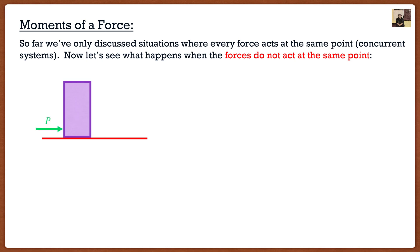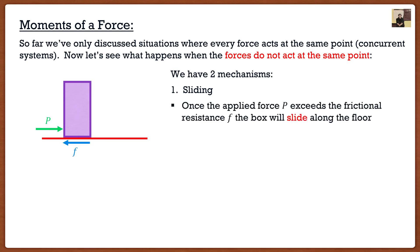So if I were to take my box and apply a force at the very bottom of the box, we actually have two mechanisms. The first one is perhaps the simplest to imagine: we have sliding. We know at the bottom of this box we have a frictional force that's going to try and counteract any movement I put onto the box. Now, if my force that I'm putting on exceeds the frictional force, the box is actually going to start to slide. That's the first mechanism.